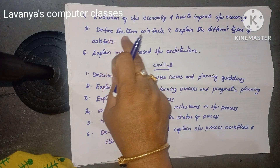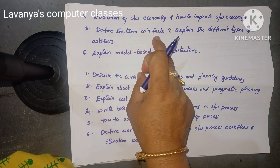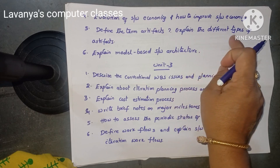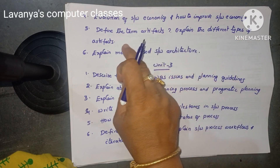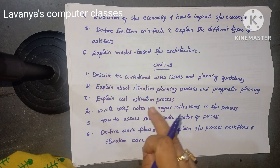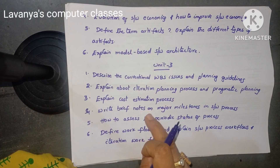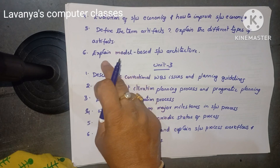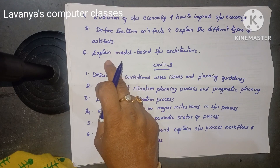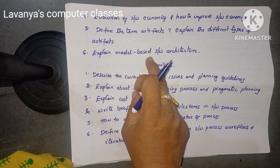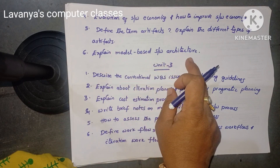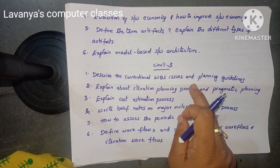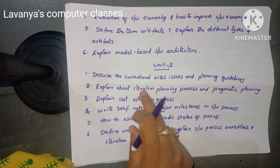Very important question. Next questions are: evaluation of software economics and how to improve software economics. Next one is: define the term artifacts and explain the different types of artifacts — they are asking any one type of artifact. Next: explain model-based software architecture. These are the important questions in Unit 2.